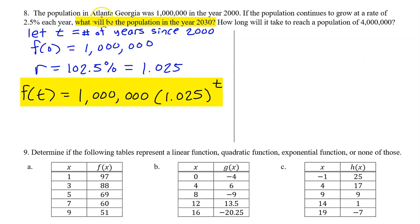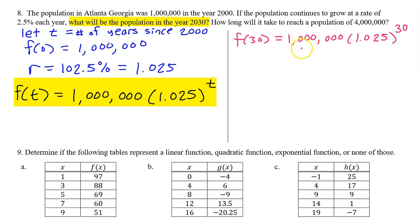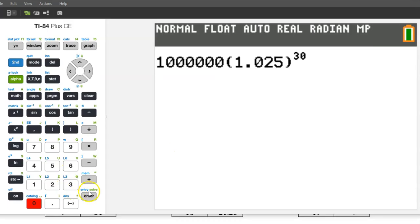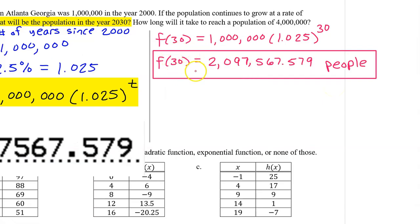We can now use this model to find the population in the year 2030. That will be 30 years after the year 2000. So we are looking for f(30). That will be 1 million times 1.025 to the 30 power. Put this in the calculator. And there it is. In the year 2030, there will be about 2,097,567.579 people. Be prepared to round this to the nearest whole number, since it's people. But I would only do that if they ask you to in the problem.